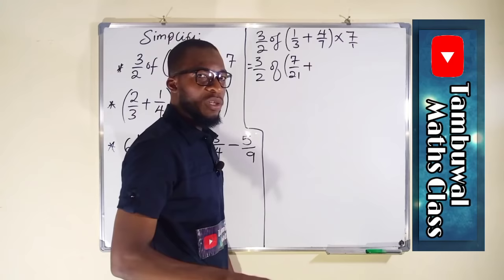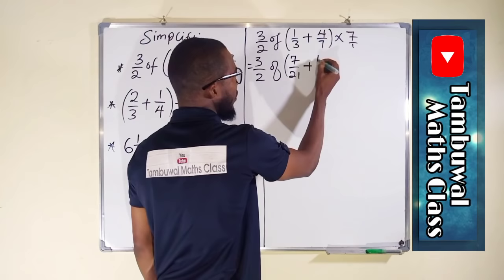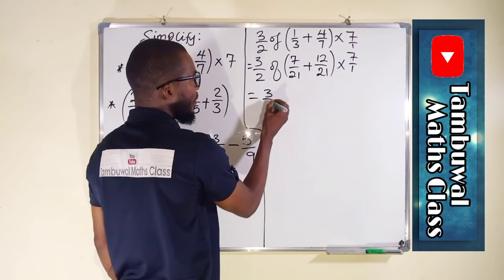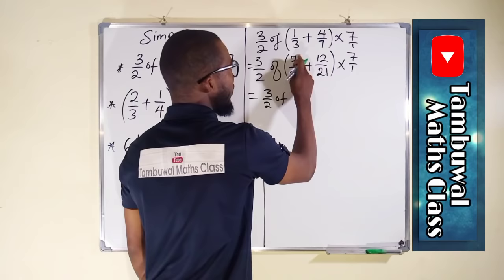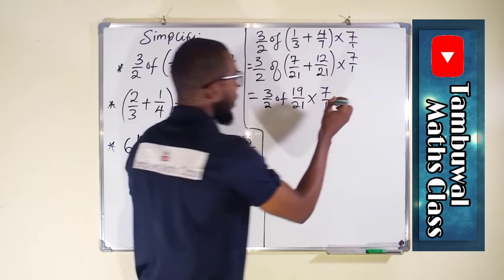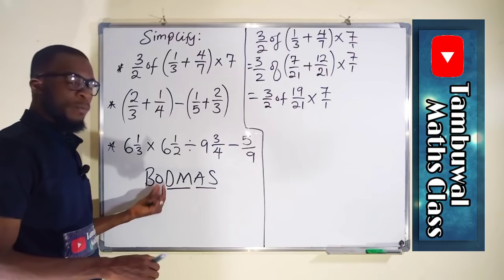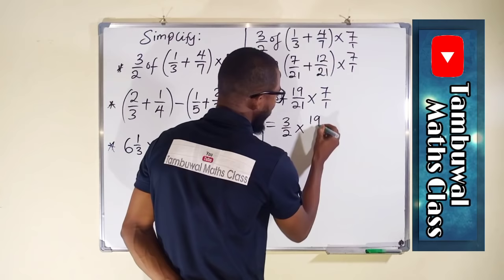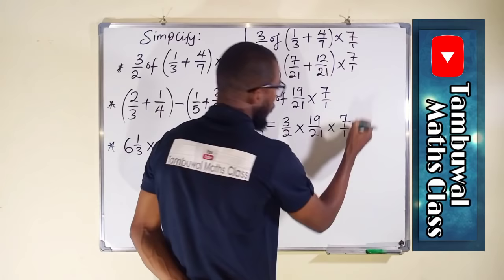To change 4 over 7 into 21, we multiply by 3 and do the same to the numerator. 4 times 3 is 12, giving us 12 over 21. Adding: 7 plus 12 is 19, so we get 19 over 21. This is multiplied by 7 over 1, giving us 3 over 2 of 19 over 21 times 7 over 1. We have cleared the bracket. Next is Orders — 'of' means multiplication.